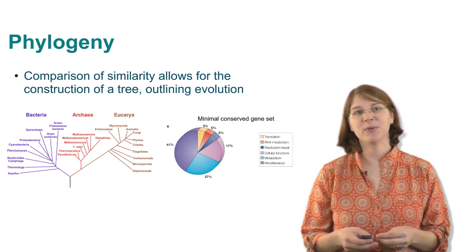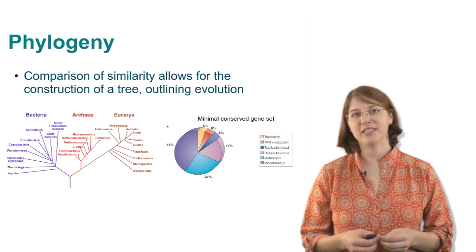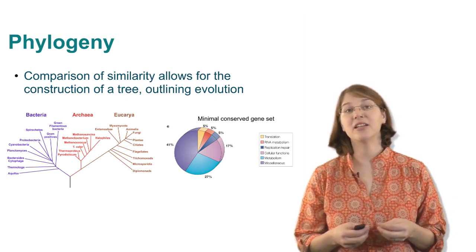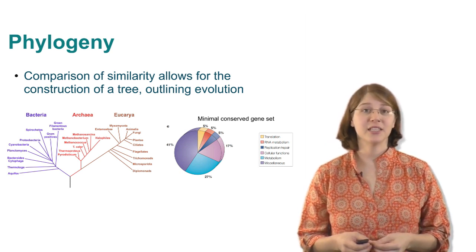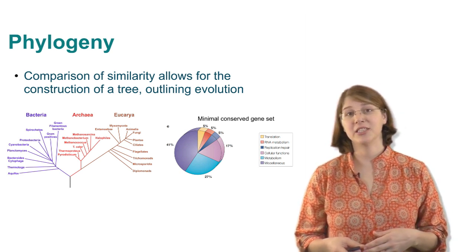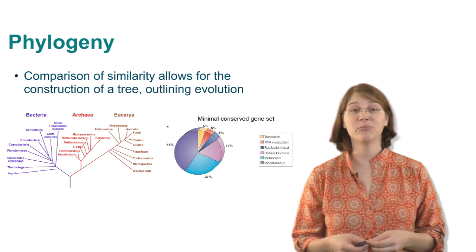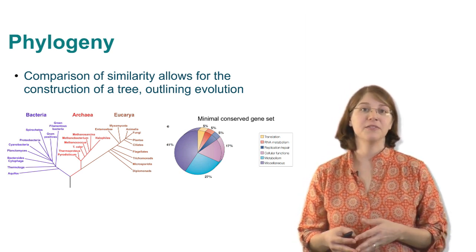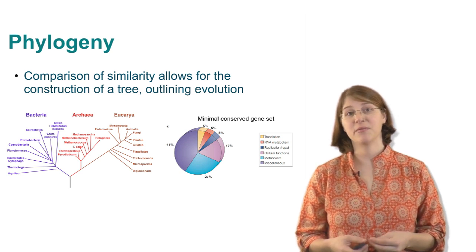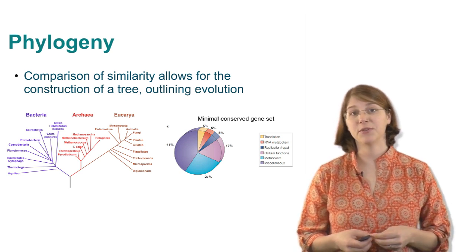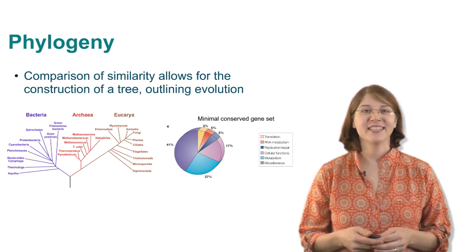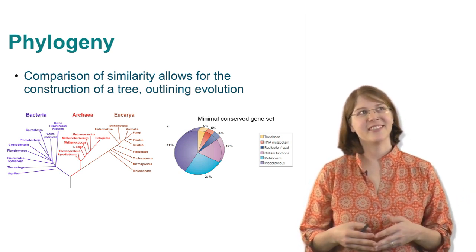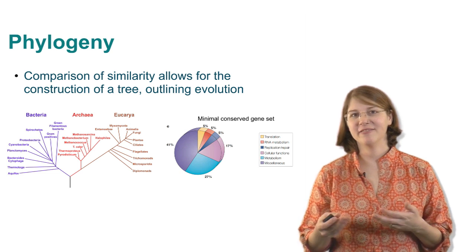When you look at the minimal gene set of all organisms, you can see that a large portion of these genes is related to the central dogma: transcription, translation, ribosomal proteins, about 15 percent. Other conserved features are in the metabolic component where we generate energy from either sunlight or from chemical energy in sugars.